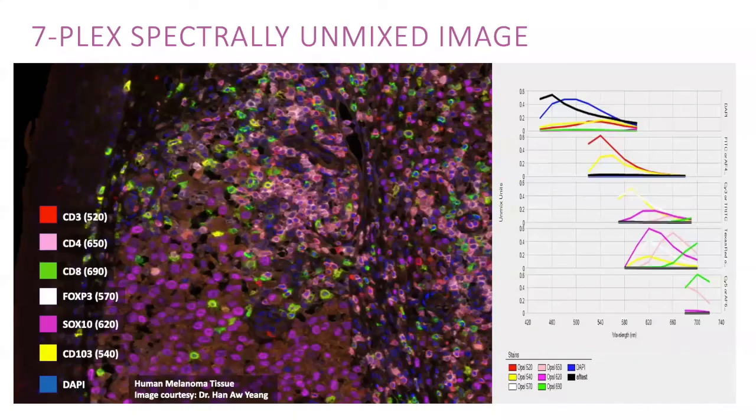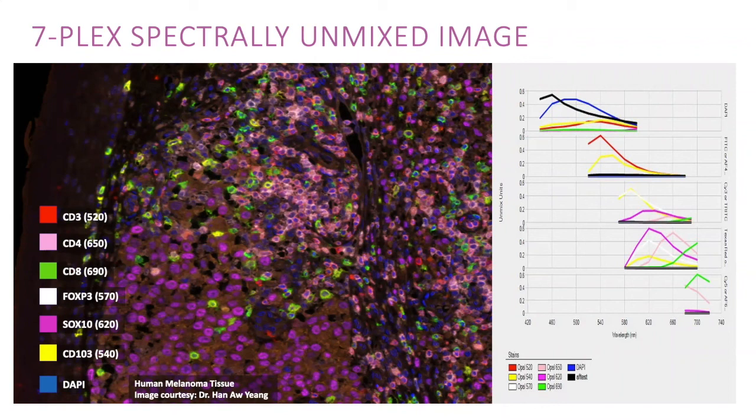And finally this slide shows the spectrally unmixed composite image showing all seven colors or the distribution of each of the biomarkers simultaneously in the tissue section. The InForm spectral library that was used is shown on the right. From this image you can quantitatively evaluate the locations, co-localizations and spatial relationships of the various biomarkers used in this panel.